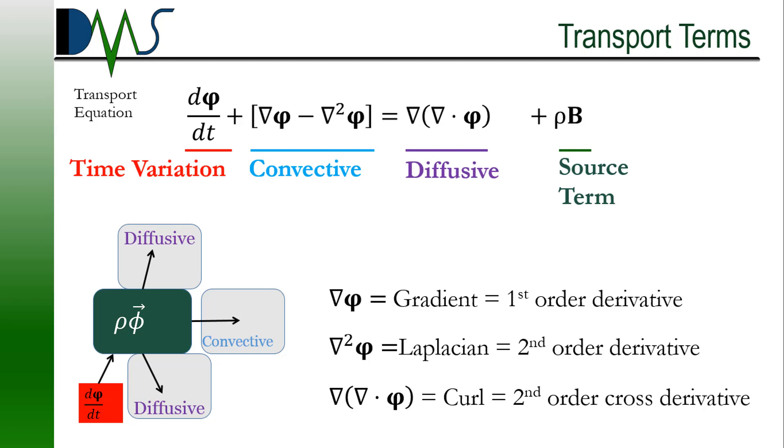Then going over to the right-hand side of my equation, that is all my diffusive terms. That is the curl of my variable. It is, again, a second order derivative, but it's a cross derivative. And then finally, over on the right, we have our source term, which are the things that just get generated. Now, why do I have them grouped like this? Well, time variation and source terms are, I would say, somewhat self-explanatory. Time variation is its own separate dimension, and source terms are things that just basically pop into being on their own right.